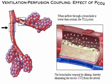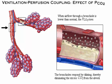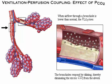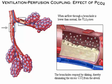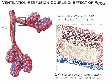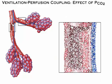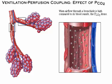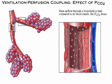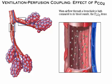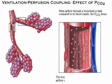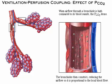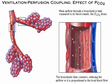When airflow through a bronchiole is high compared to its blood supply, the PCO2 drops. The bronchioles then constrict, reducing the airflow so it is proportional to the local blood flow.